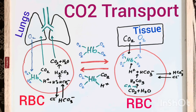The majority of CO2 produced in the cell is transported as bicarbonate ions, accounting for about 80% of the total carbon dioxide produced in the peripheral tissues. 5-10% gets dissolved in the plasma and another 10% binds to hemoglobin to form carbamino compounds. Hemoglobin does not only transport oxygen but also carries carbon dioxide from the peripheral tissues to the lungs.